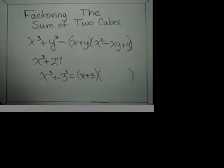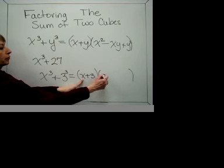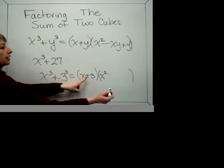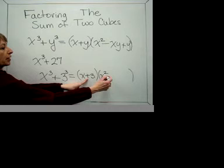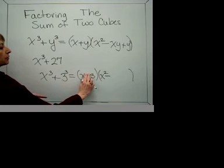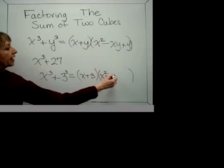And what goes in the trinomial is the square of what's in the first term, so we'll have x squared. Change the sign, so this is plus, make that a minus. Multiply the two together, so that'll give you 3x.